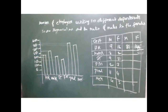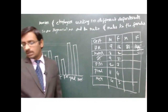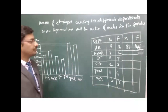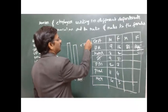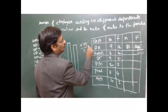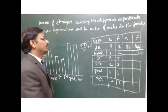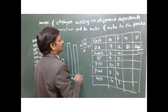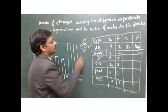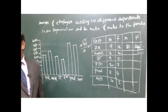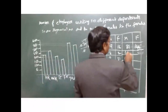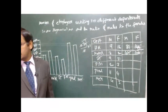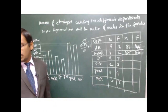Marketing department has a total of 275 members with a 3 is to 2 ratio. So 275 divided by 5 into 3 gives the males. 55 into 3 equals 165 males, and 55 into 2 equals 110 females in marketing department.